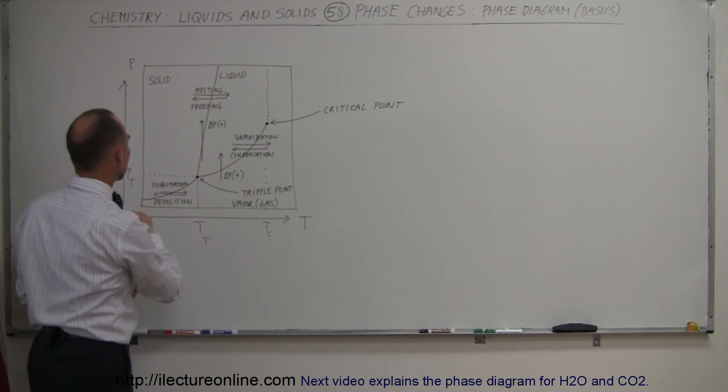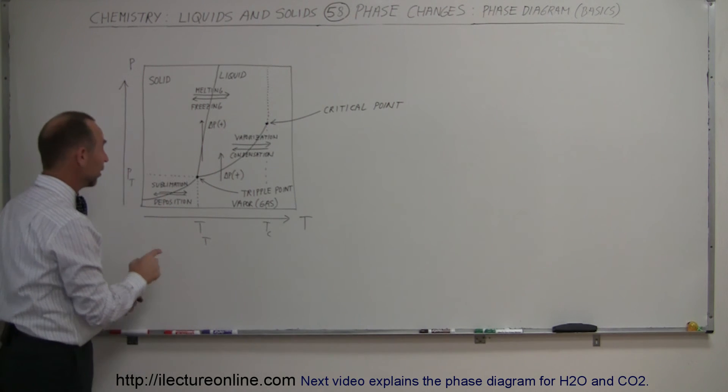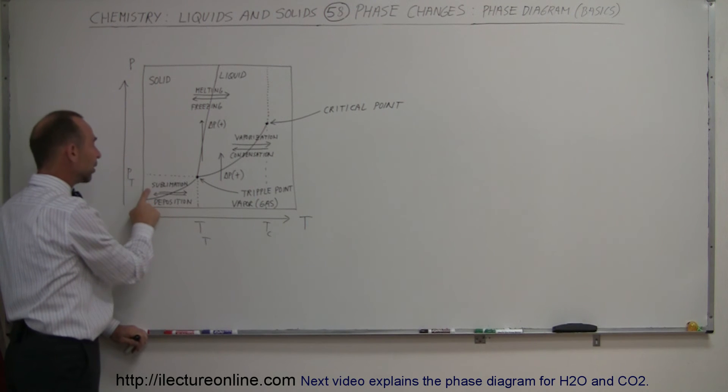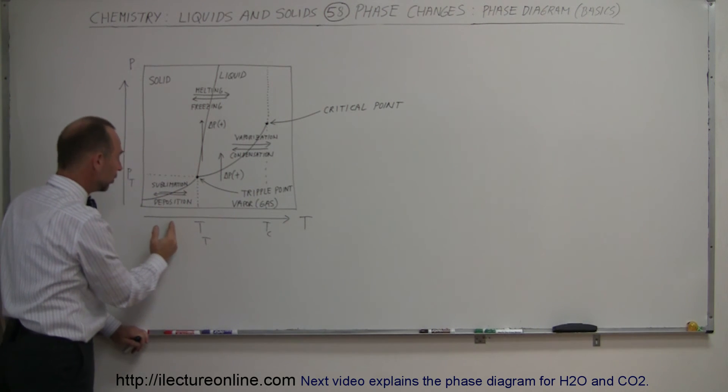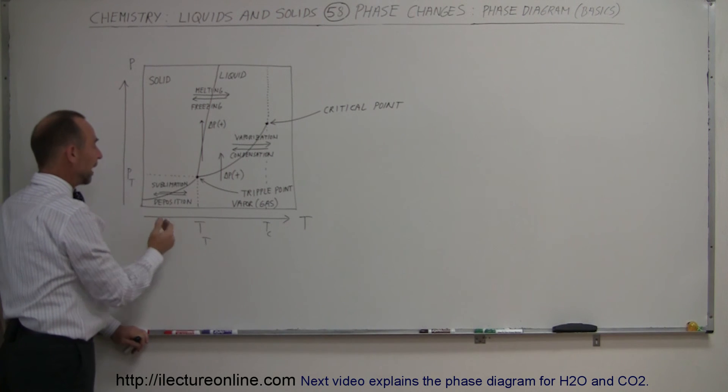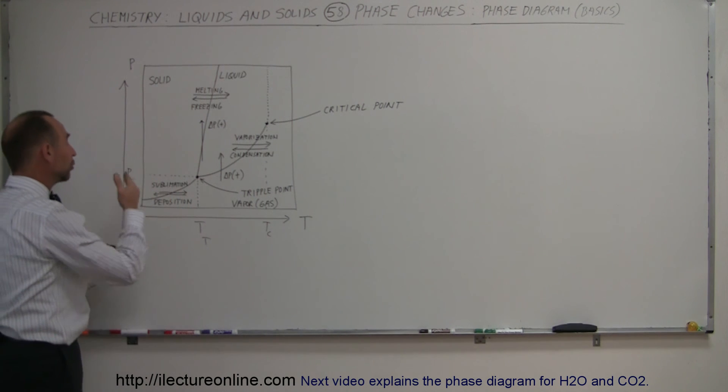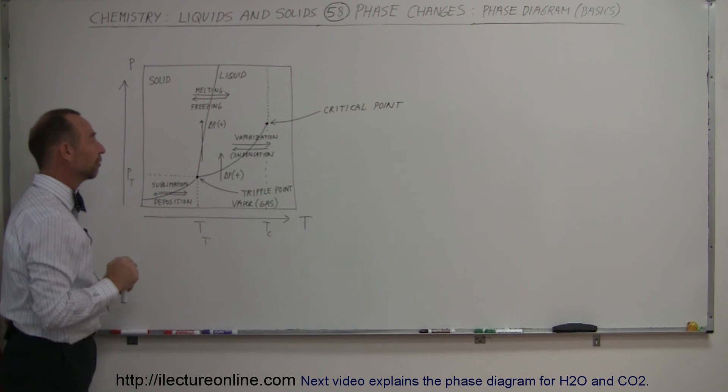Triple point right here. Sublimation deposition. So we have an occasion here where if the pressure is low enough, a substance can actually sublimate, go directly from the solid to the vapor. That's called sublimation. It occurs at a certain temperature and usually at very low pressures. And when the temperature drops far enough, it depositions itself. It goes from the vapor form directly to the solid form. Again, that happens at very low temperatures.